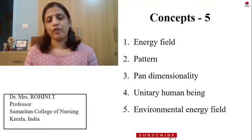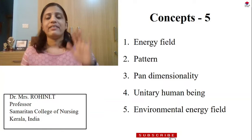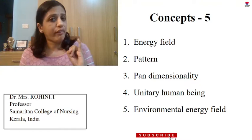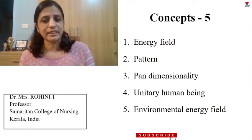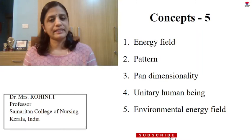Now, coming on to what is the 5 square, 3 square formula. First, let us talk about 5 square, which means in Rogers' theory, 5 appears twice. One is for concepts — there are 5 concepts — and the second 5 is for assumptions — that is 5 assumptions. So, 5 concepts and 5 assumptions. Let us quickly see what the 5 concepts are.